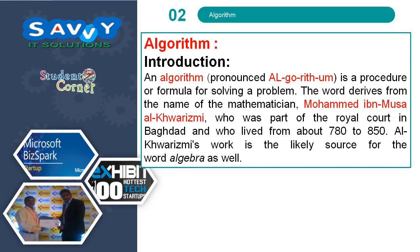Now we need to know about an algorithm. An algorithm is a procedure or a formula for solving a problem. The word derives from the name of the mathematician Muhammad Ibn Musa al-Khwarizmi, who was part of the royal court in Baghdad and who lived from about 780 to 850. He was also an expert in algebra.